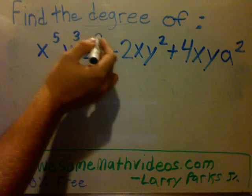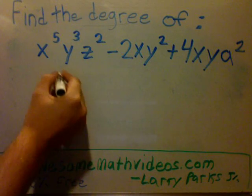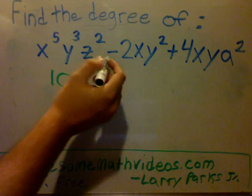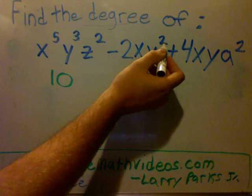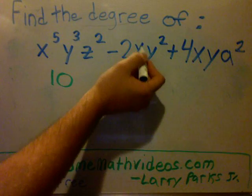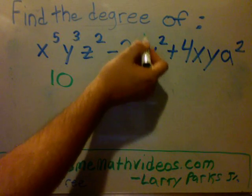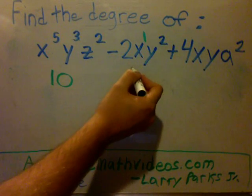5 plus 3 plus 2 is 10. And you go to the next one. You add two y's and how many x's? It's like an imaginary one. 2 plus 1 is 3.